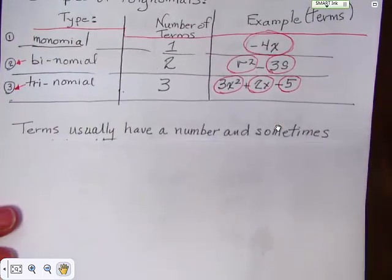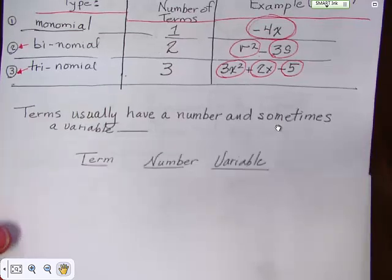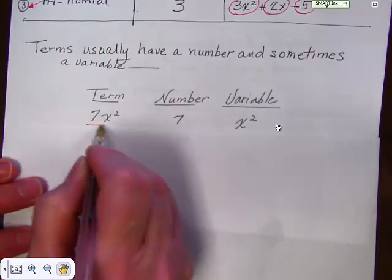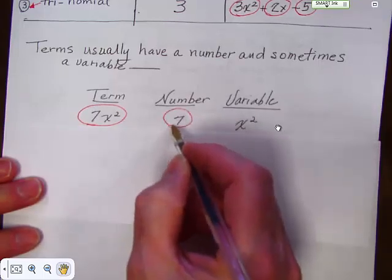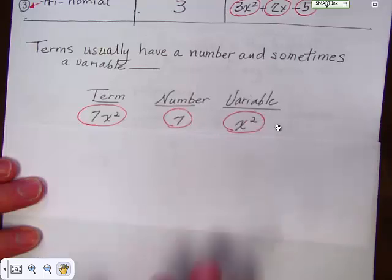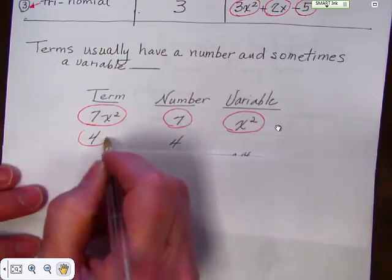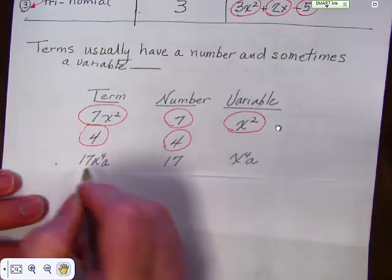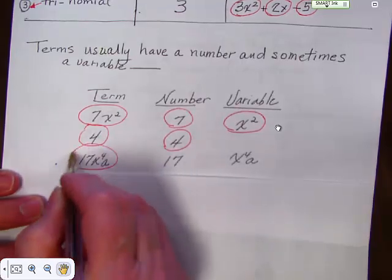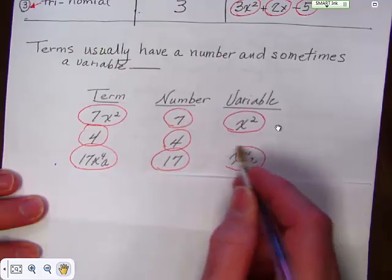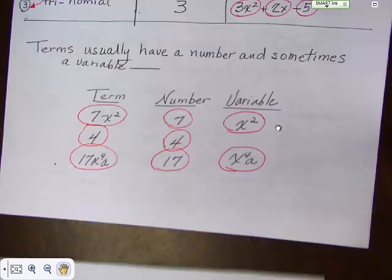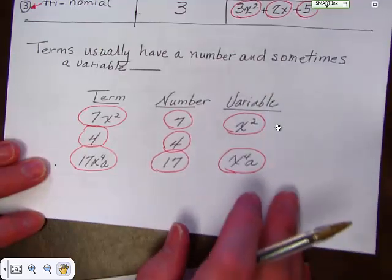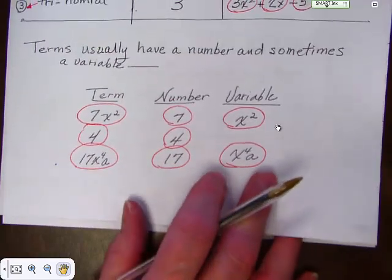Terms usually have a number and sometimes a variable. And here's some examples. Terms can look like this. This is a term. This is the number part of that term. This is the variable part of that term. Here's another term. It's just the number 4. And all there is is the number. Here's another term. Single term. The number with that term is 17. The variable is x to the 4th times a. And you will be asked to define. You will be given terms and then you'll have to split them into numbers and variables. So this is a good thing to have in your notes so that you have something to look back at.